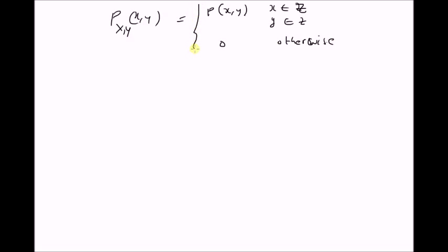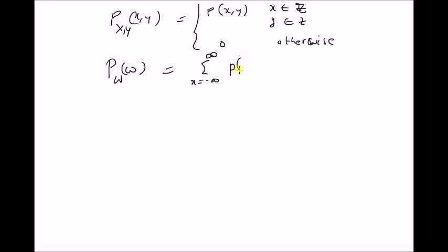Given this joint PMF, we want to prove that the probability mass function of the random variable W is equal to the summation from x equals minus infinity to plus infinity of p(x, w minus x), where the random variable W is equal to the sum of the two random variables X and Y, that is W = X + Y.